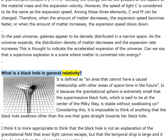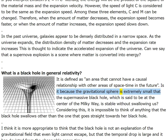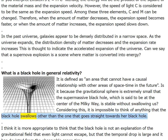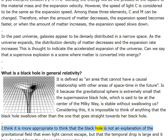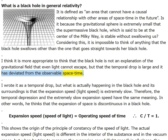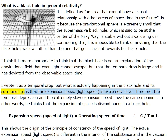What is a black hole? In general relativity it is defined as an area that cannot have a causal relationship with other areas of spacetime in the future. It is more appropriate to think that the black hole is not just an explanation of a gravitational field that even light cannot escape, but that the temporal drop is large and it has deviated from the observable spacetime. What is actually happening in and around the black hole is that the expansion speed (light speed) is extremely slow.